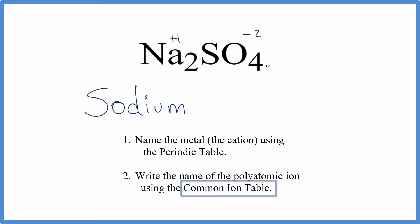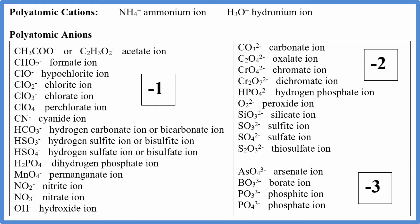We'll go to the common ion table and we're looking for SO4 two minus. As we look through the table, we see that SO4 two minus is called sulfate. So we go back and we write sulfate.